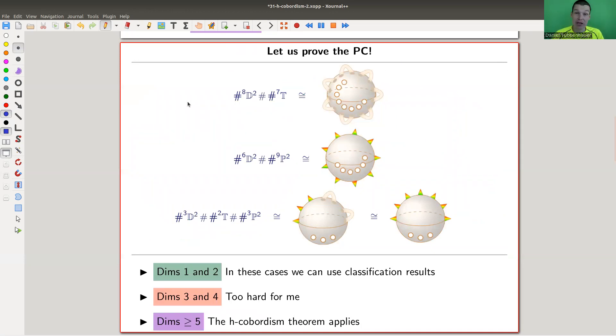Anyway, Poincaré conjecture, let's prove it in dimension one and two on this slide. Actually I'm only doing dimension two. I leave dimension one to the interested viewer. Dimension one is really not hard. Dimensions five or bigger, that's what I will sketch in the remaining part of the video.